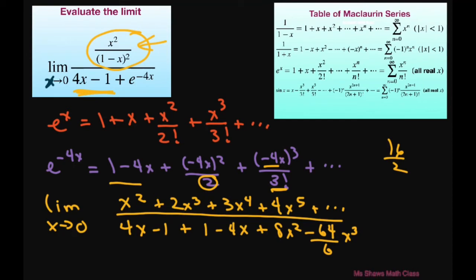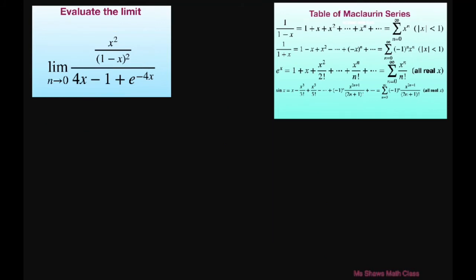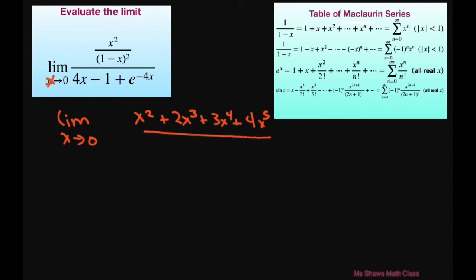Now simplifying: the 4x terms cancel and the 1s cancel out. So we have the limit as x approaches 0 of x squared plus 2x cubed plus 3x to the fourth plus 4x to the fifth, all divided by 8x squared minus 32 divided by 3, times x cubed, plus dot dot dot. To evaluate the limit, let's divide each piece by x squared — multiply numerator and denominator by 1 divided by x squared.